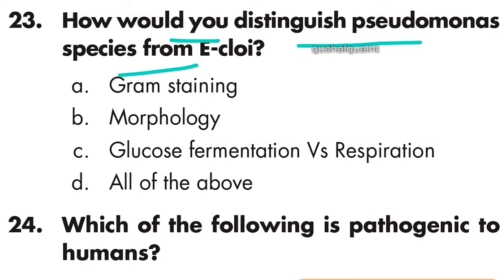Question 23: How would you distinguish Pseudomonas species from E. coli? The answer is by glucose fermentation versus respiration — option C is correct.